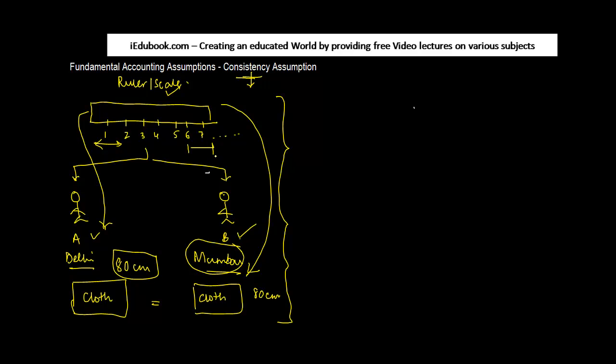Two centimeters of scale A is going to be equal to two centimeters of scale B. You must be wondering why I'm giving you this example. The reason is because of this principle - the difference between these two is consistent. You might be sitting wherever, but the results you will get are going to be the same, and the underlying assumption is both these clothes are equal.